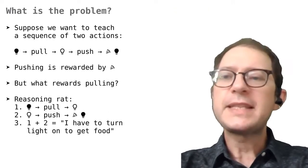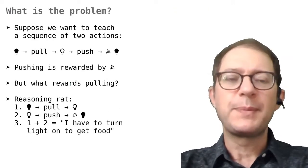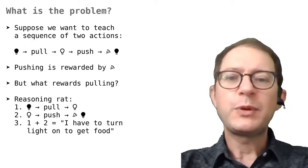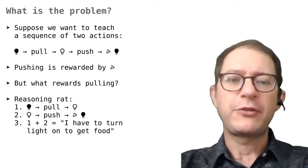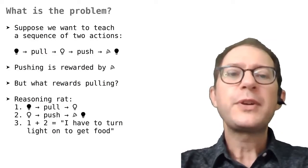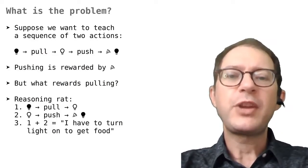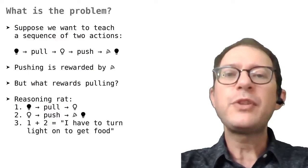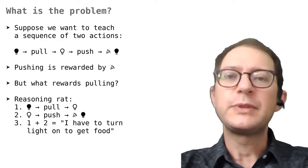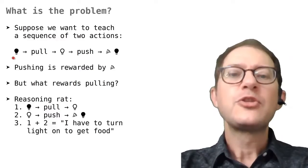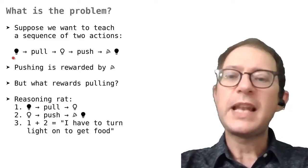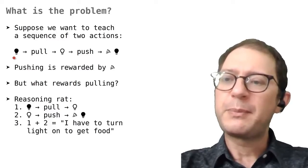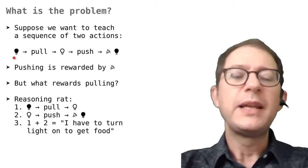First of all, let's see what the problem is. Imagine we want to train a rat to perform two actions: first it has to pull a chain to turn on a light, and then push a lever to get food. What the rat sees is first the light off — the black light bulb.